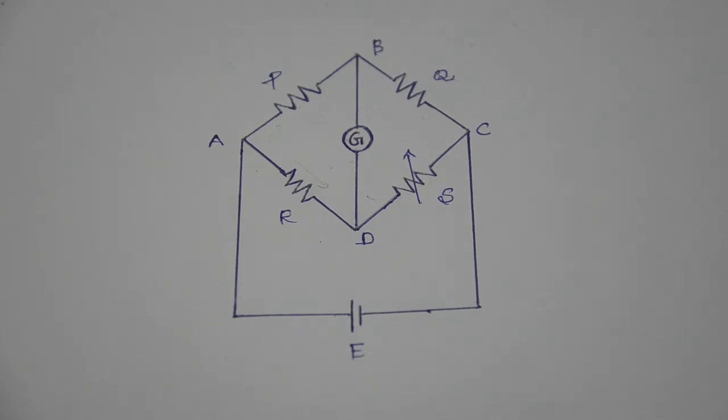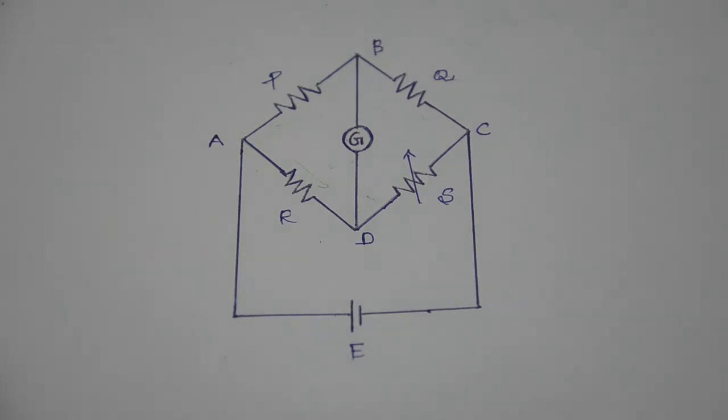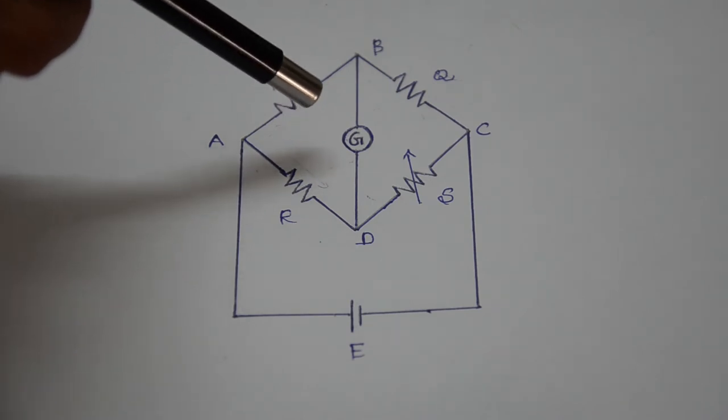Battery is connected across the other two terminals A and C. Now we adjust the variable resistance S until the deflection in the galvanometer becomes null. When there is no current through the galvanometer, the bridge is said to be balanced. That means the voltage difference between point B and D becomes zero. At that condition, current flowing through P and Q is I1 and the current flowing through R and S is I2.